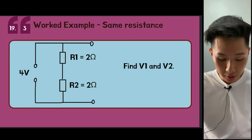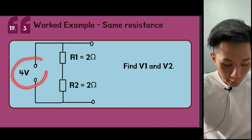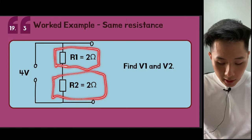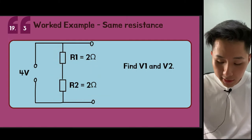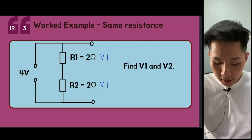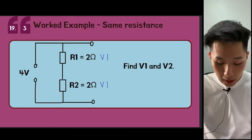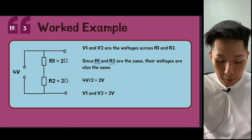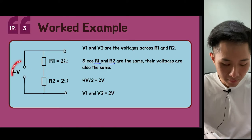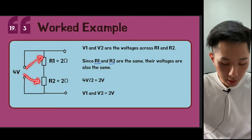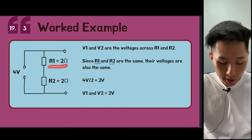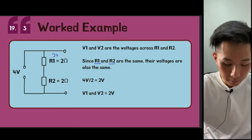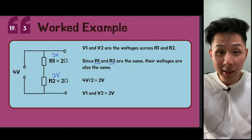For example, imagine a source with an EMF of 4 V and a potential divider with two resistors of 2 Ω each. Since R1 and R2 are equal, the 4 V is split equally, so each resistor has 2 V across it. This is a simple example where equal resistances give equal voltage shares.